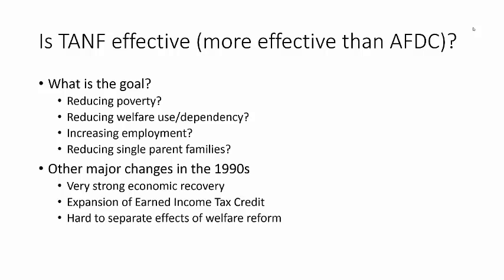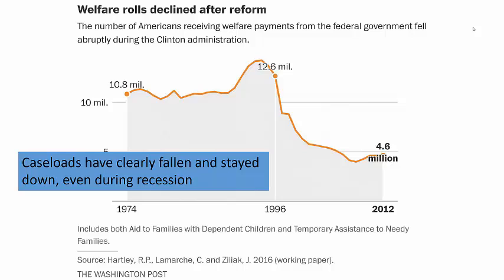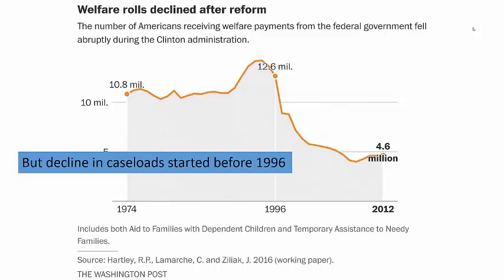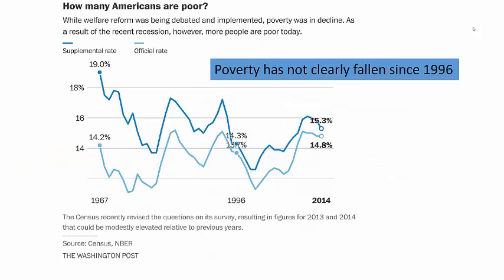This will be seen in several of the following graphs. Here, for example, it is clear that TANF caseloads fell after 1996 and have stayed relatively low. It is also clear, however, that this decline was already underway prior to 1996. In the case of poverty, there is no clear pattern if we compare poverty rates before versus after welfare reform. We see a slight increase in poverty, regardless of the measure used, from 1996 to 2014.